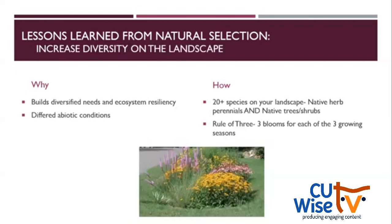Once we've reduced monocultures, we want to increase diversity on the landscape. This allows for different abiotic conditions — different light, soil, and water conditions. Our program in Cook recommends 20-plus species on your landscape — a mixture of native herbaceous perennials and native trees and shrubs — because it creates diversified conditions. A rule of three: three blooms for each of the three growing seasons allows for different kinds of plants and diverse food sources. Someone mentioned the Callery pear — I just wrote an article on that one; it's becoming a huge issue in grasslands.